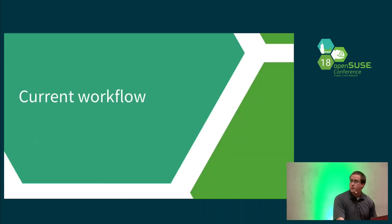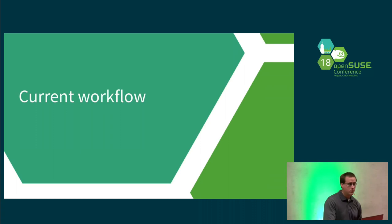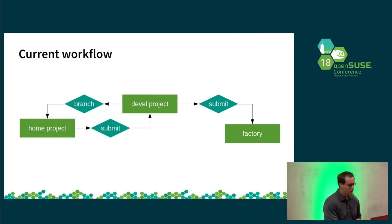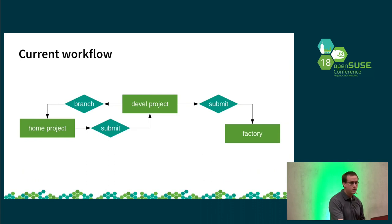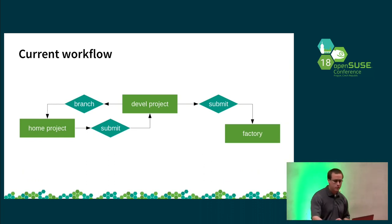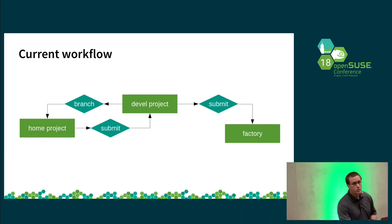Let's look at the current workflow. This is going to be summarized, just to give everyone an idea of what's going on. To start off with, you're probably most familiar with the general idea of developed projects that eventually get submitted into Factory. Everyone branches into their own project, does development there, submits to the developed projects — sometimes directly — and then on to Factory.